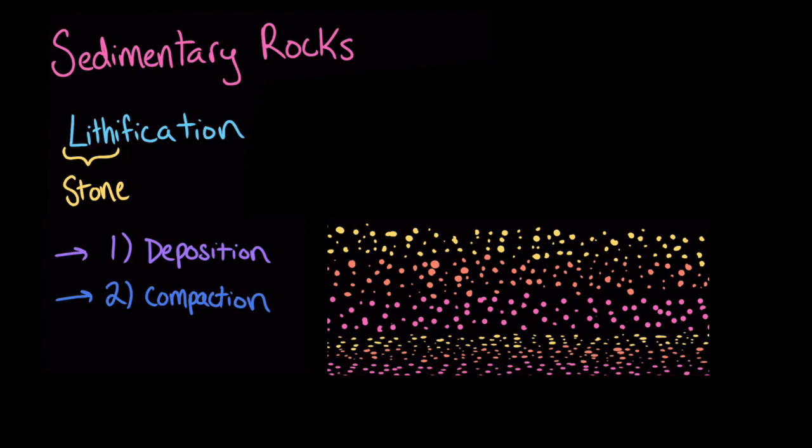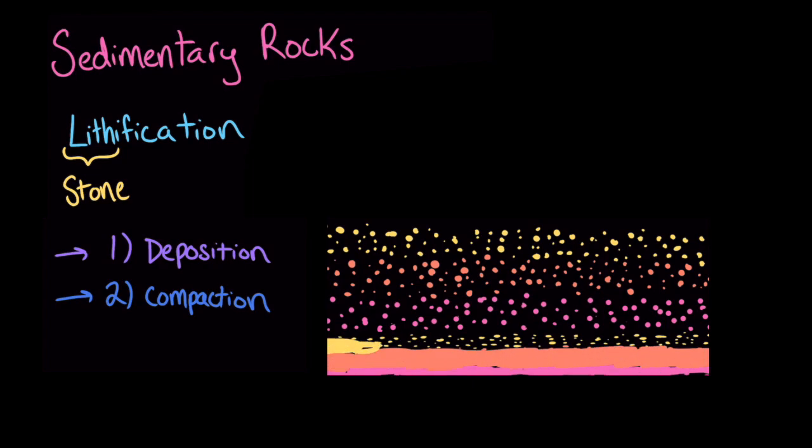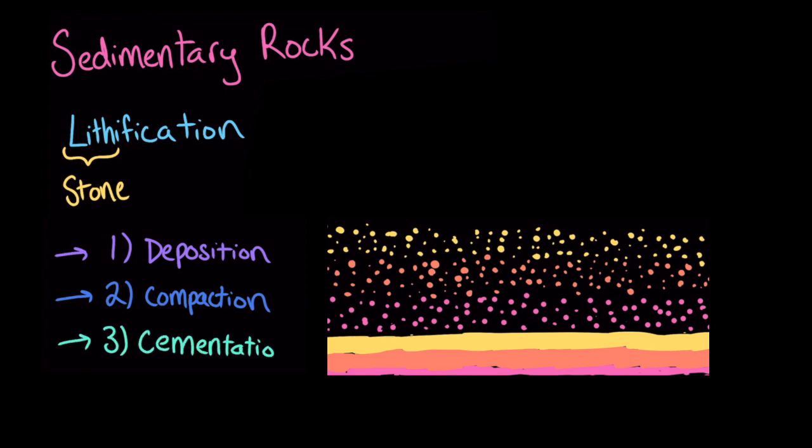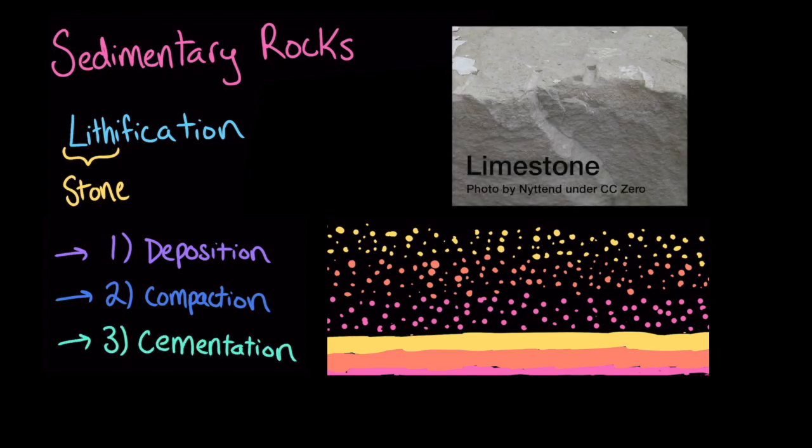When water moves through the layers of sediment, it can carry dissolved minerals with it. The water can leave these minerals in between the sediment particles, which makes everything stick together. This cementing of sediment is called cementation. Limestone is a sedimentary rock that is made when sediment that contains a lot of calcium carbonate in it goes through lithification.